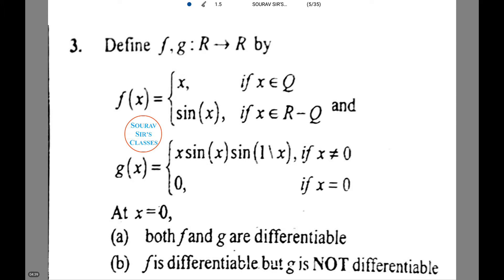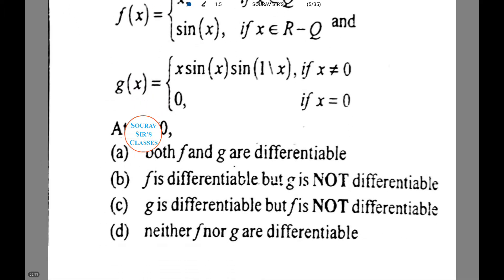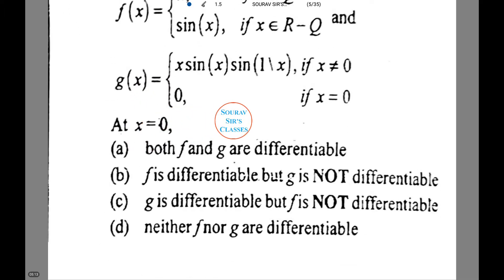We have to define f and g such that f, g are from R to R. Now, we are given f(x) equals x if x belongs to Q, and sin x if x belongs to R minus Q. For g(x), it's x sin x times sin 1/x if x not equals 0, and 0 if x equals 0. Now, we need to figure out what the value of f(x) and g(x) will be at x equals 0.